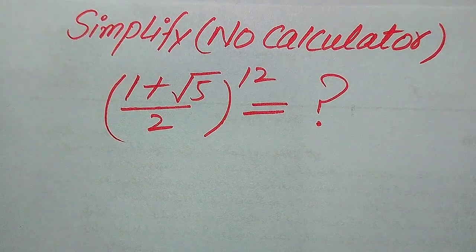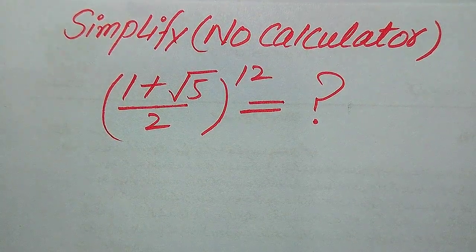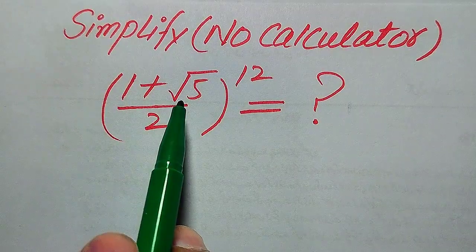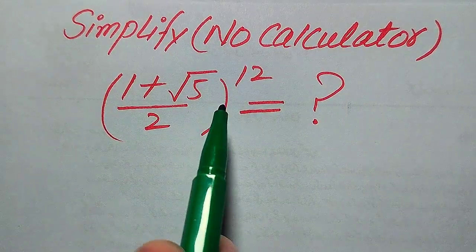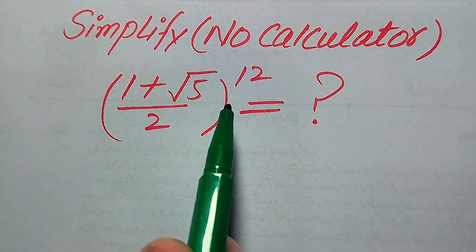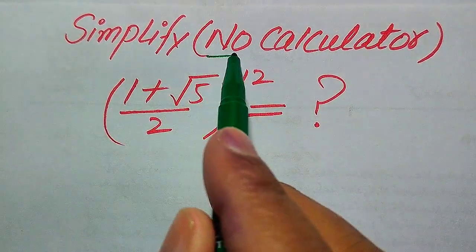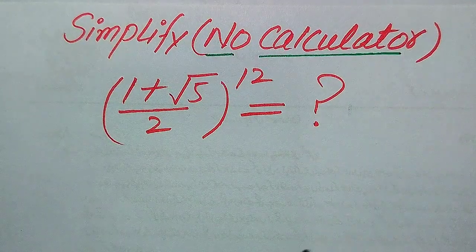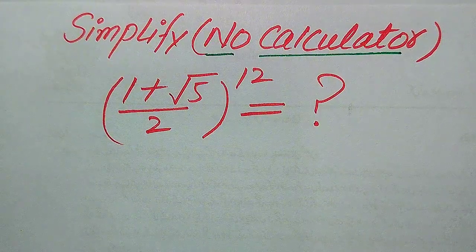Hello everyone. How to simplify this nice algebraic expression without using the calculator: we have (1 plus square root of 5) divided by 2, and its whole exponent is 12. We need to write this algebraic expression into simplified form. The calculator is not allowed in this problem, so we need to do all of the working on paper.